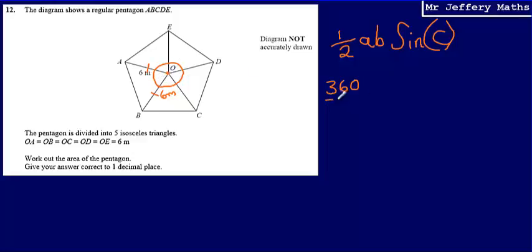I've got 1, 2, 3, 4, 5 angles, so 360 divided by 5 gives me 72. That angle there is 72 degrees.